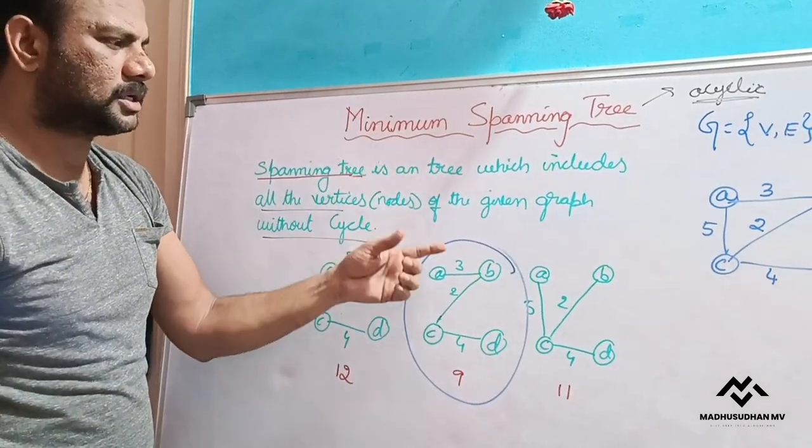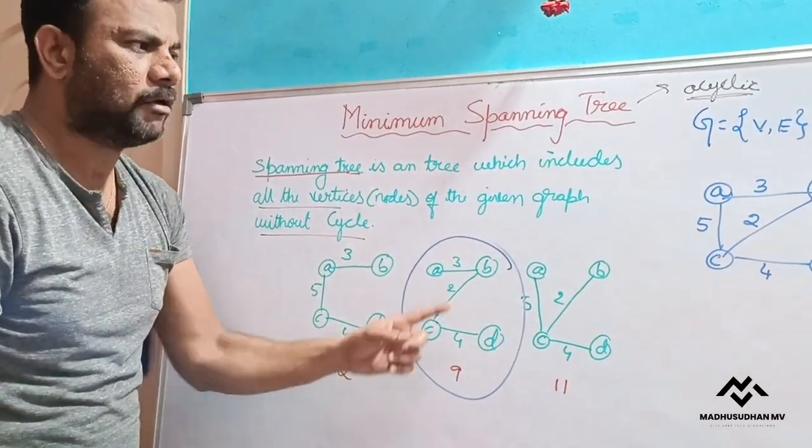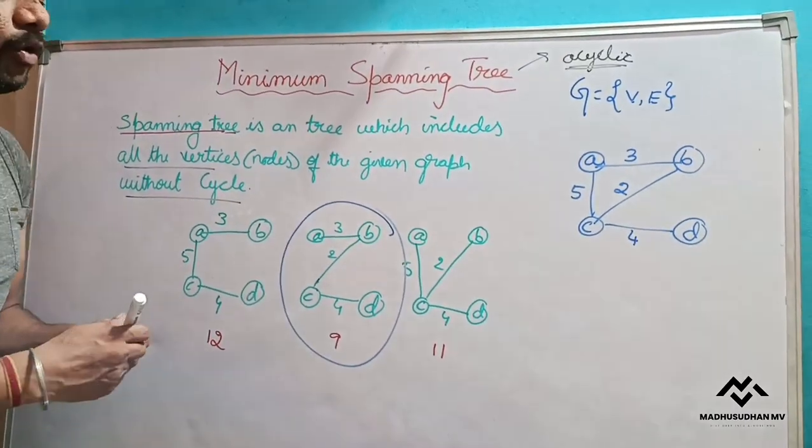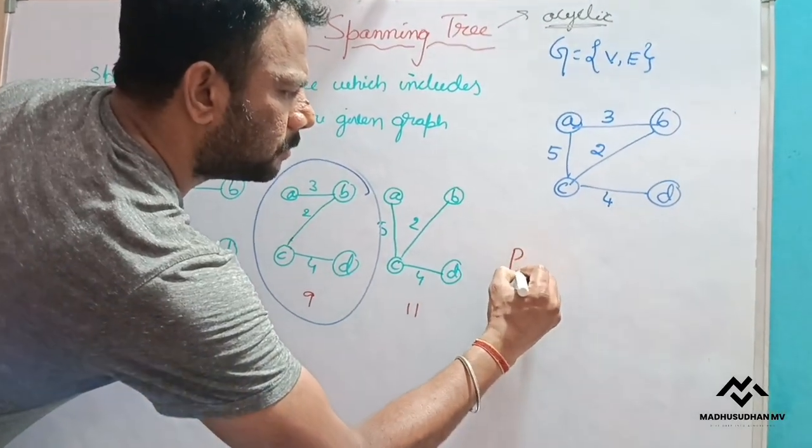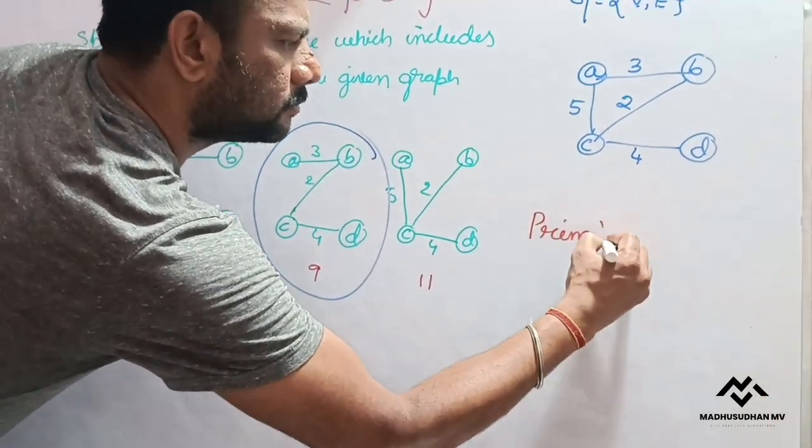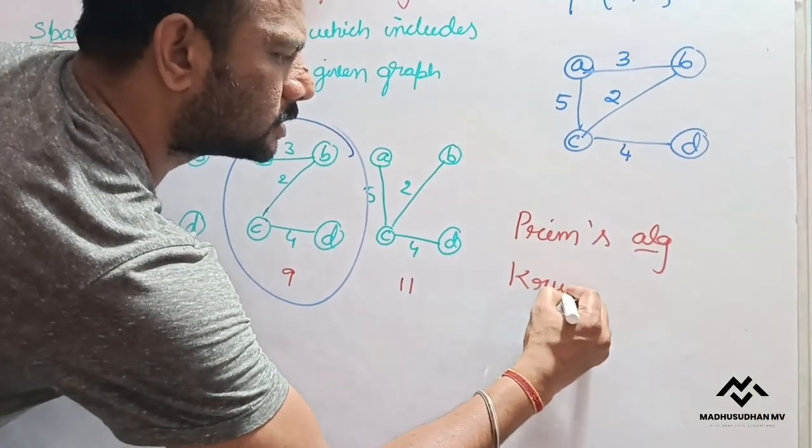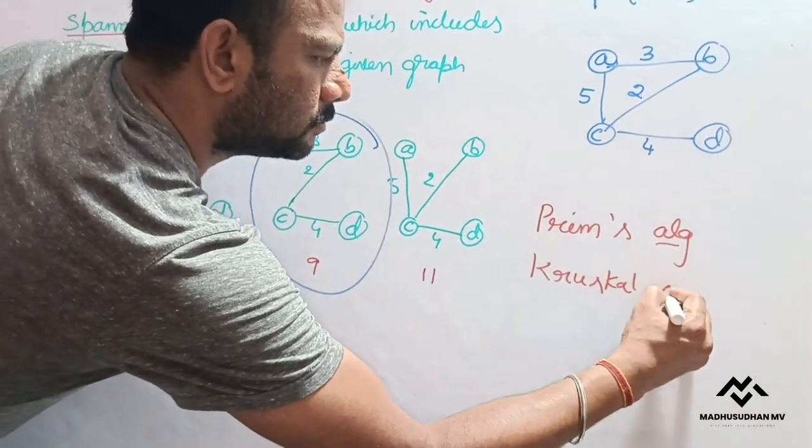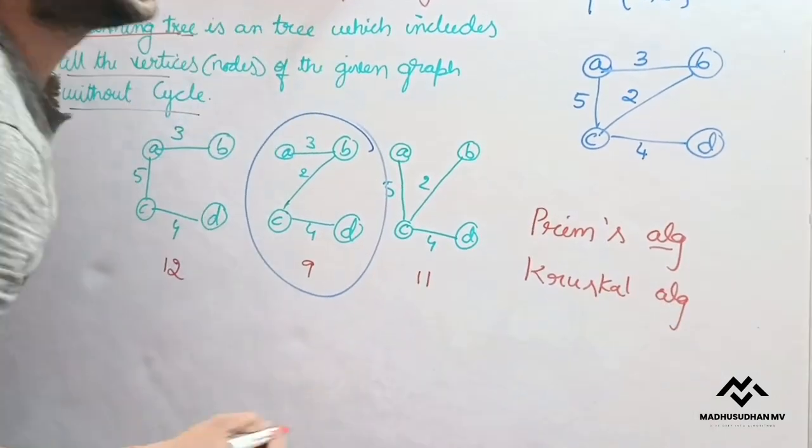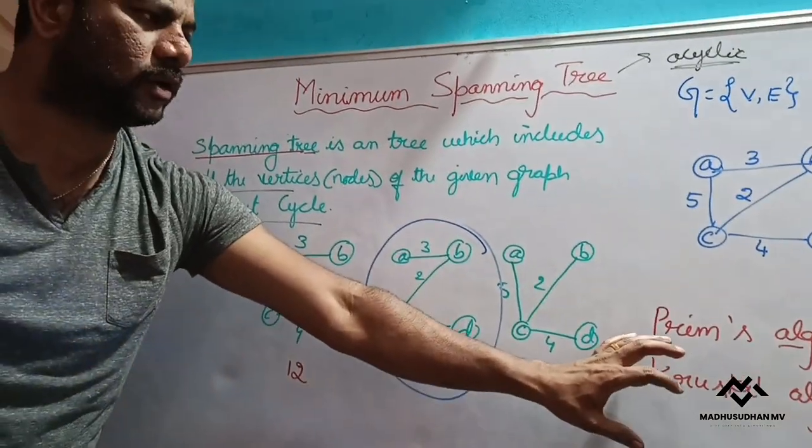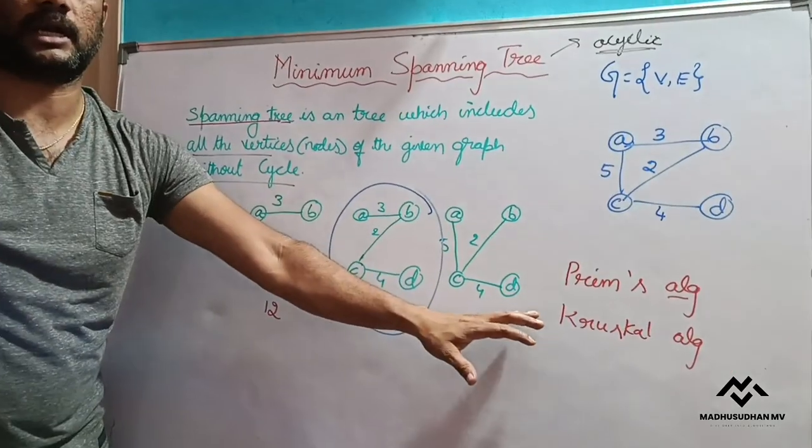So in order to construct minimum spanning tree for the given graph, we are using two algorithms. One is Prim's algorithm and another one is Kruskal's algorithm. These are the two algorithms which are used to construct minimum spanning tree.